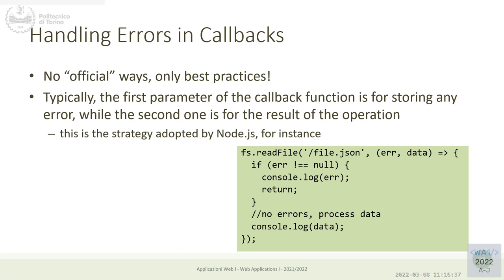If something goes wrong, the readFile procedure running asynchronously will call this callback anyway, with an error code as the first parameter. The callback has two parameters: the first is the error code, the second is the data. If the first one is null, there were no errors and the data is valid. If the first is not null, it will contain some error information — a string, a message, or an object — and the data is not valid. My callback is called with this information, and at that point I handle the error or process and store the data.